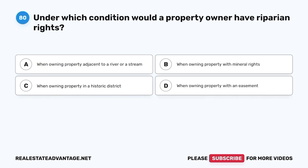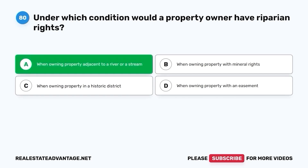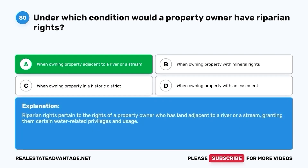Question 80. Under which condition would a property owner have riparian rights? A. When owning property adjacent to a river or a stream. B. When owning property with mineral rights. C. When owning property in a historic district. D. When owning property with an easement. The correct answer is A. When owning property adjacent to a river or a stream. Riparian rights pertain to the rights of a property owner who has land adjacent to a river or a stream, granting them certain water-related privileges and usage.